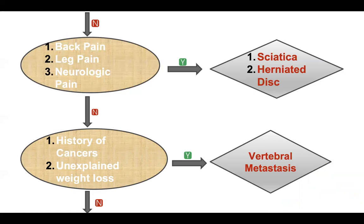Has the patient got a history of cancer? Has he or she got unexplained weight loss? If yes, then your patient likely has vertebral metastasis. We need to weigh our differential of bone primary and secondary metastases by asking about history of cancer and unexplained weight loss.